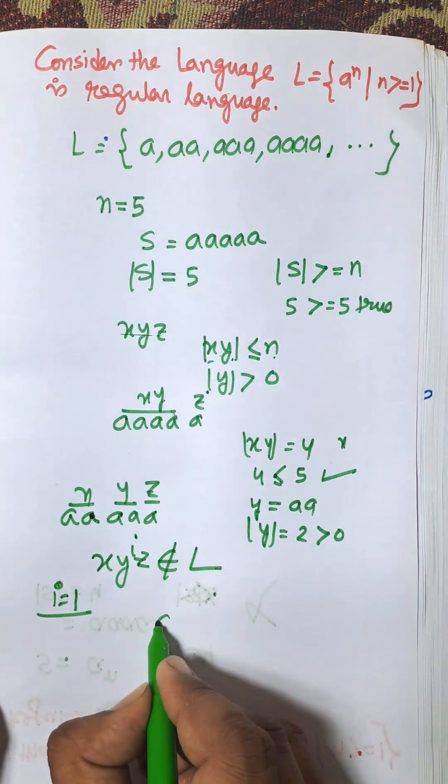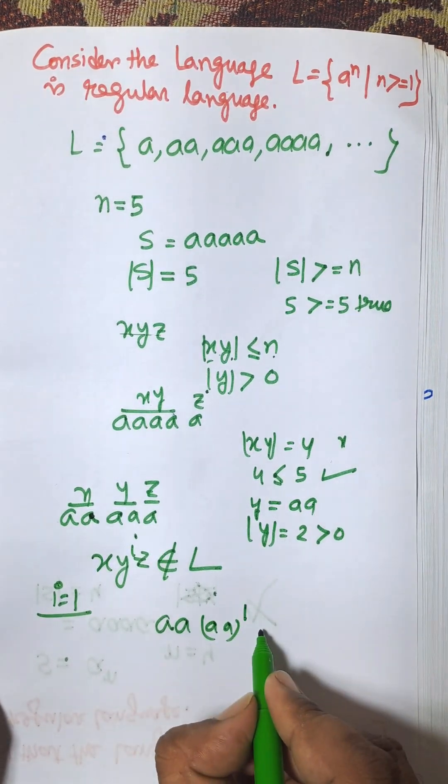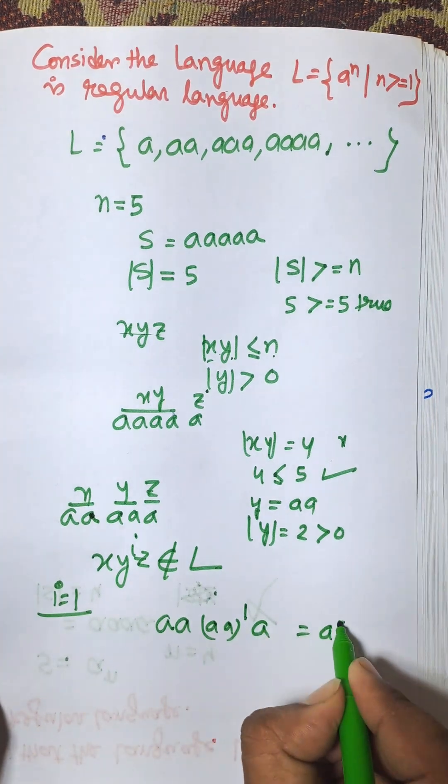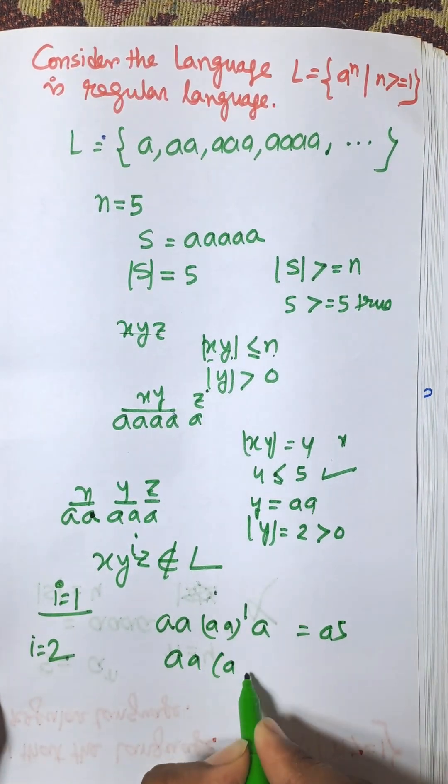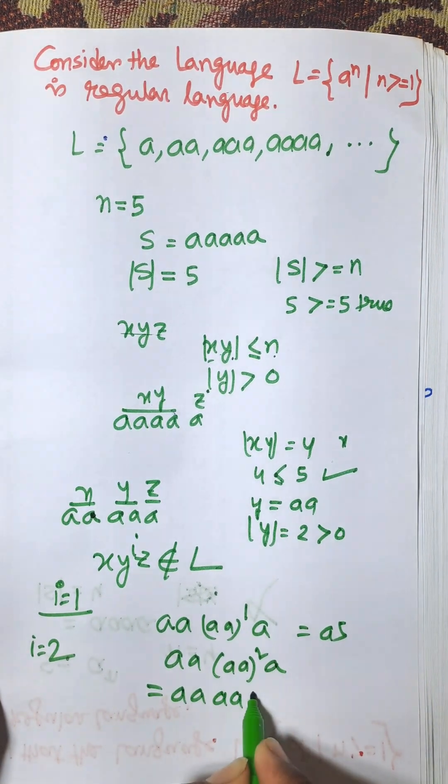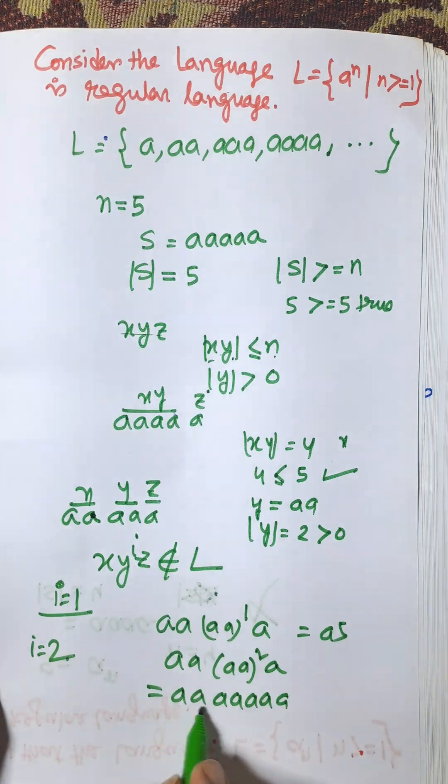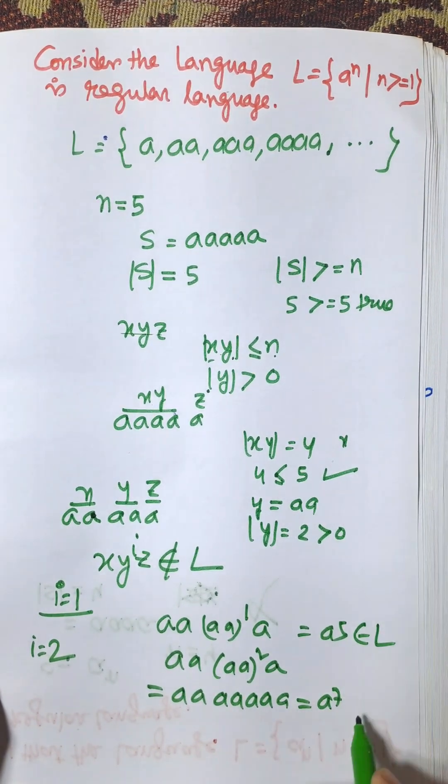When i = 2, xy^2 z = a^7. In such a way, this belongs to L and this belongs to L.